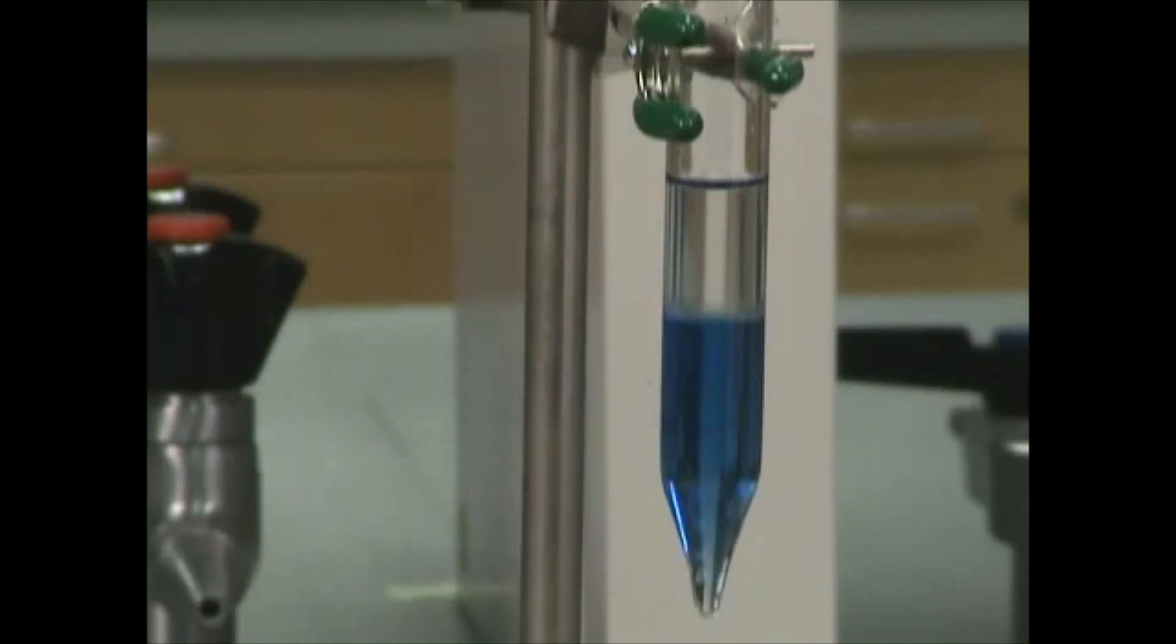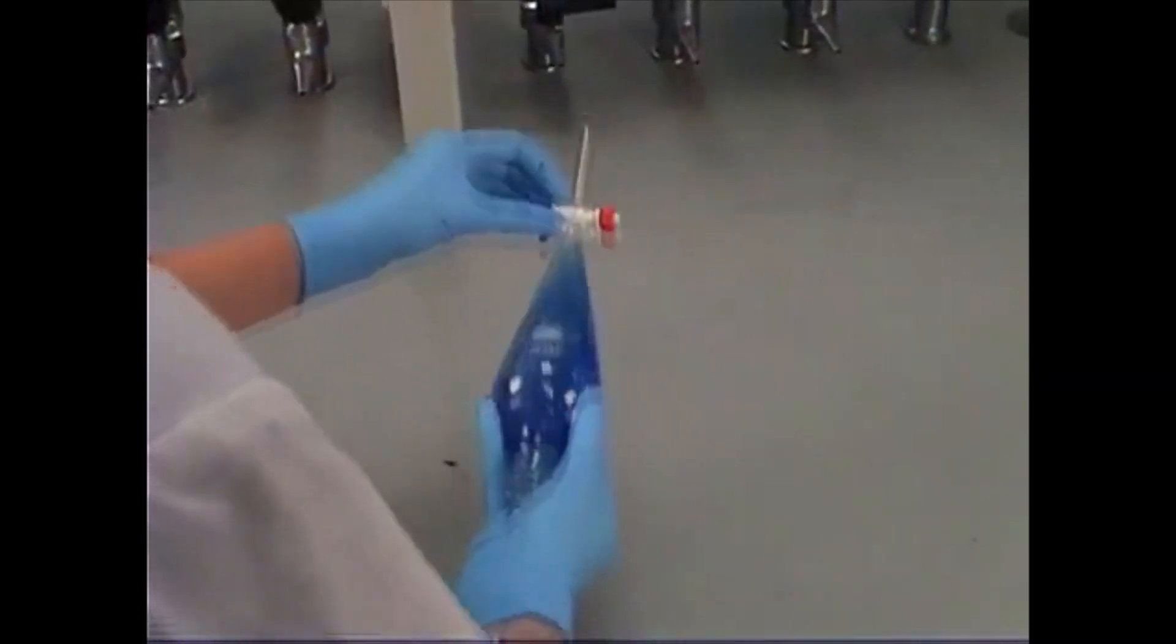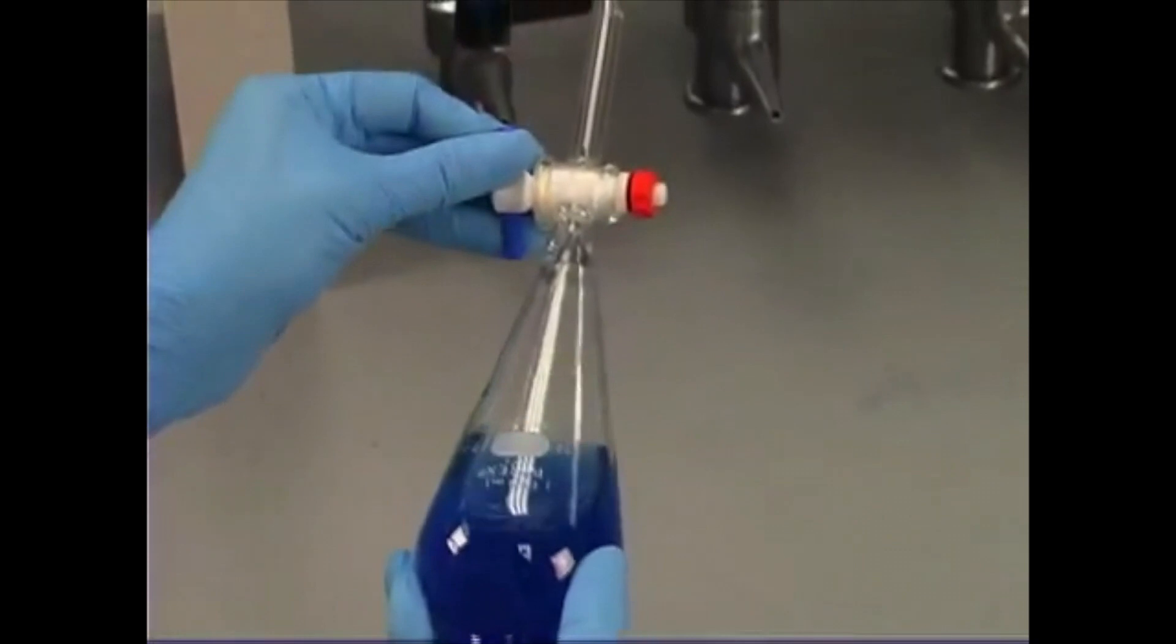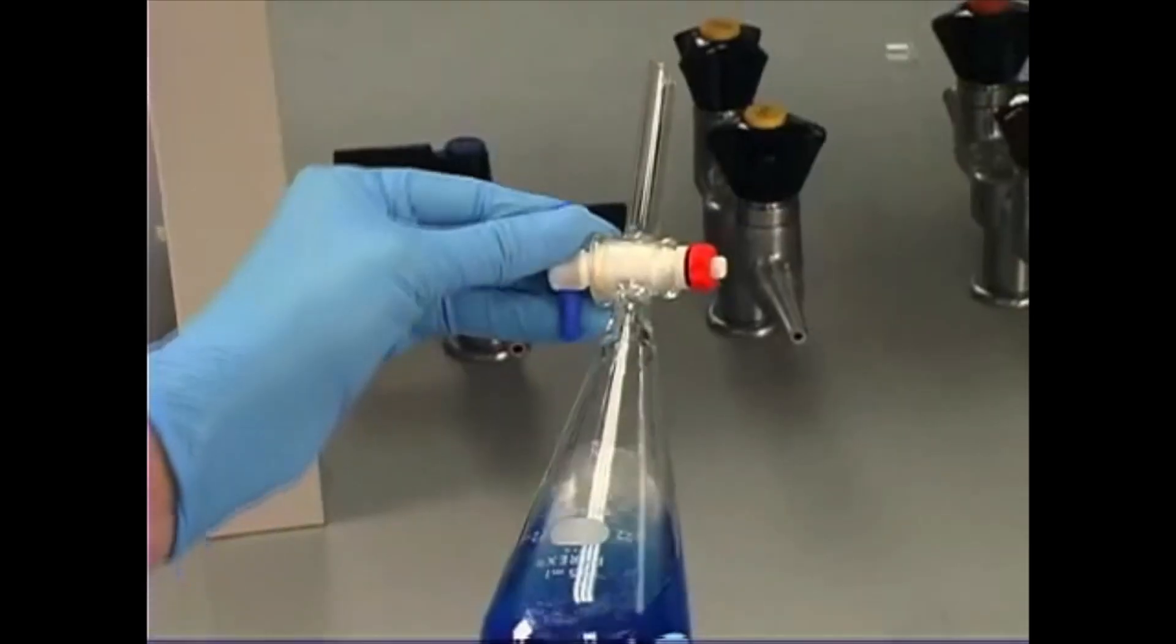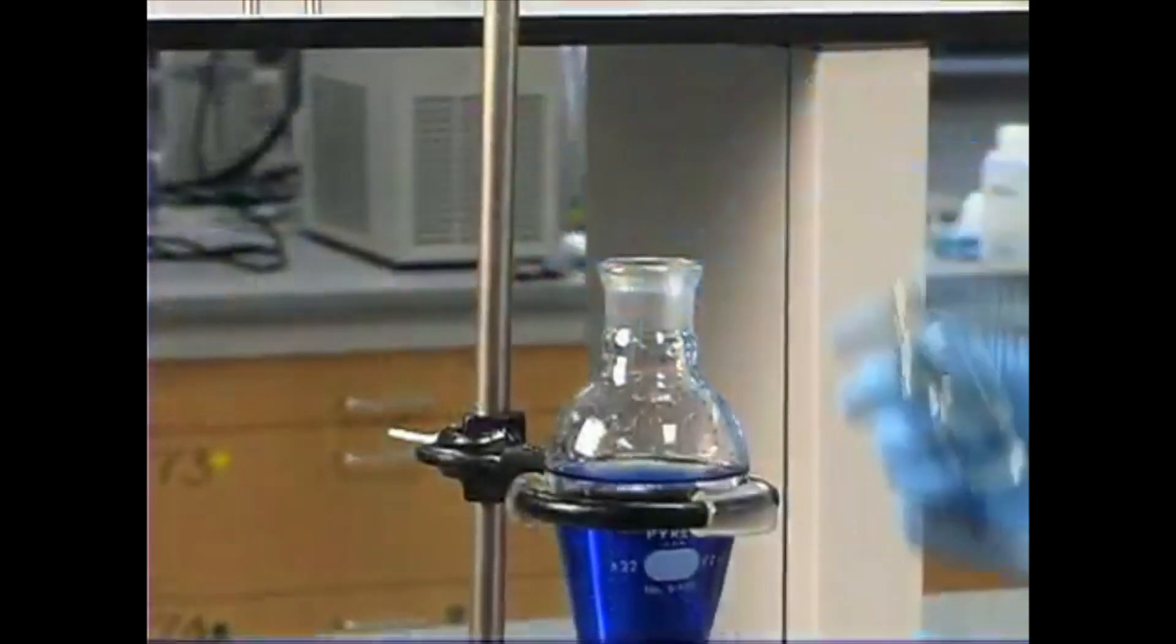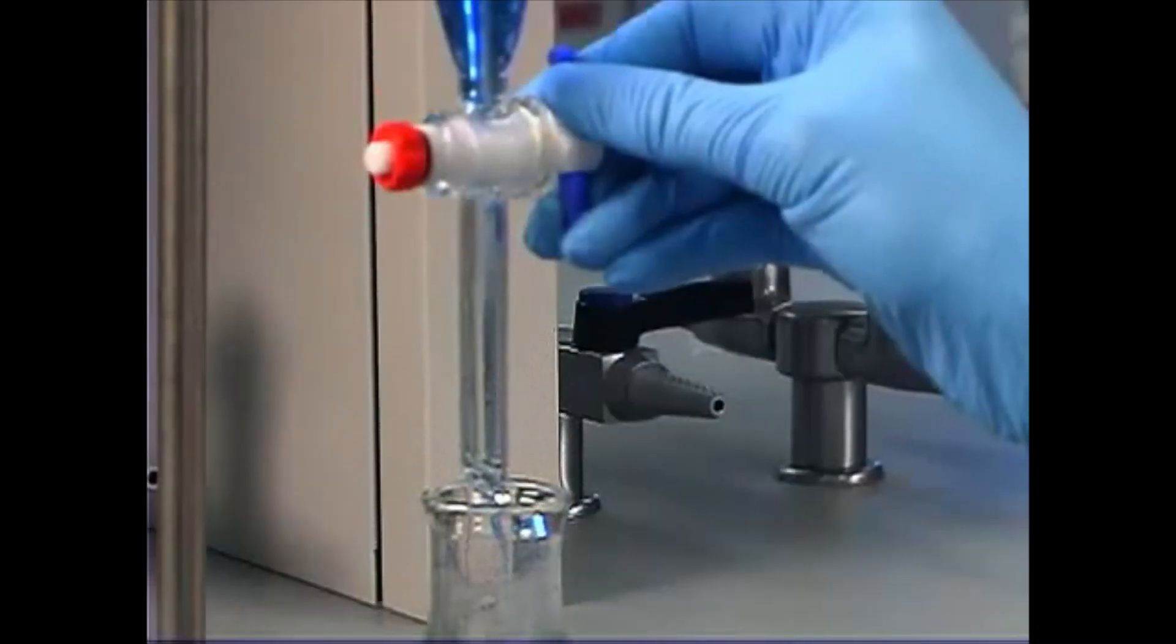For macroscale extraction, a separatory funnel is used. Support the stopper with your hand and shake to mix the layers. Then, bend the separatory funnel to release the pressure during mixing. To easily separate the bottom layer, open the stopcock and drain the bottom layer into a flask. The top and bottom layers are now successfully separated.